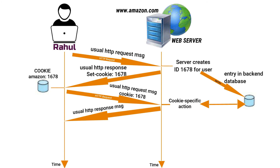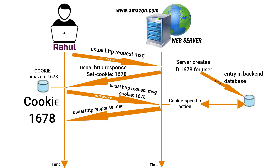As Rahul continues to browse the Amazon site, each time he requests a webpage, his browser consults his cookie file, extracts his identification number, and puts a cookie header line including that identification number in the HTTP request. Specifically, each HTTP request to Amazon includes the header line Cookie: 1678.